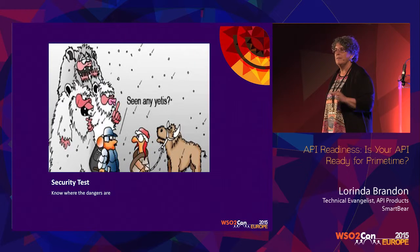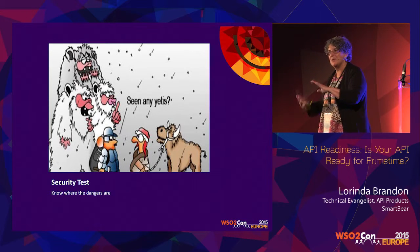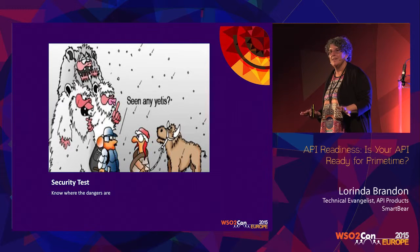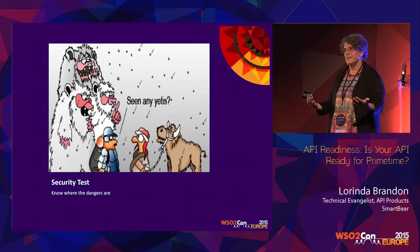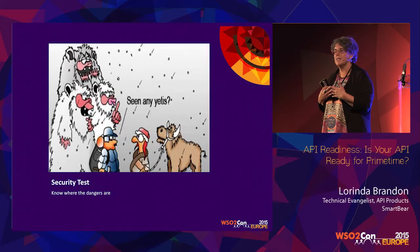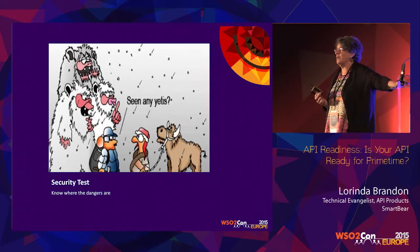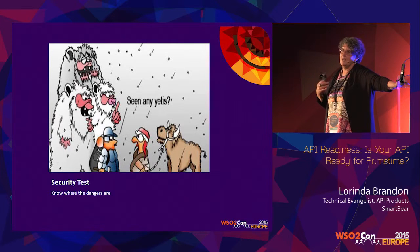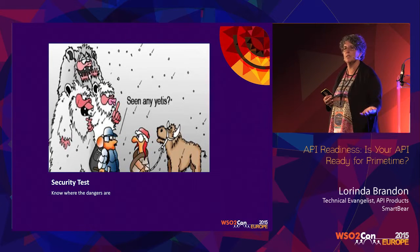Beyond checking for SQL injection or XML bombs, you want to look at your payload and do some payload analysis, because people can hack your API without actually hacking it. If you're delivering data that people can use maliciously — like Tinder, which when it first came out delivered your exact geolocation through its API, even though the client only showed 'she's about half a mile away' — that's very dangerous. You need to make sure you're not delivering data that people can use maliciously.